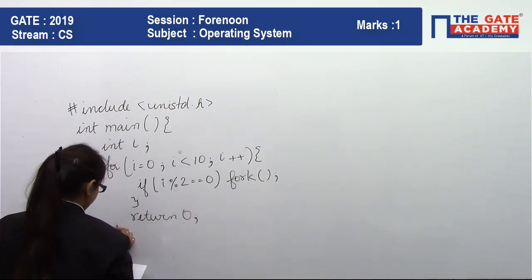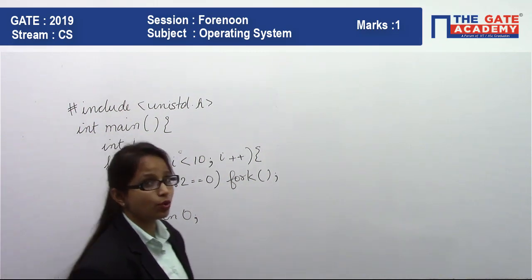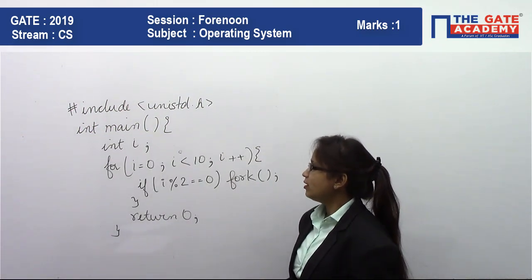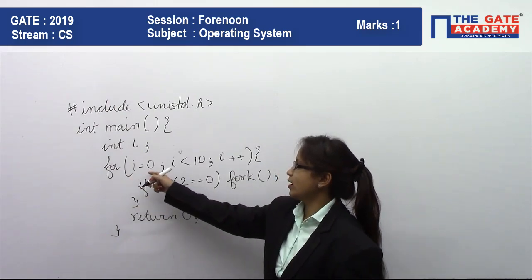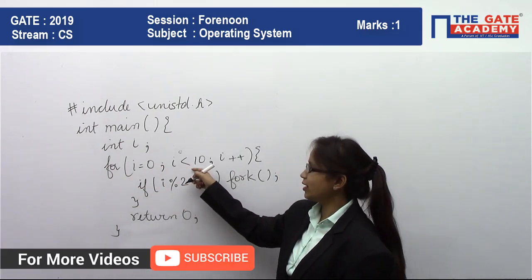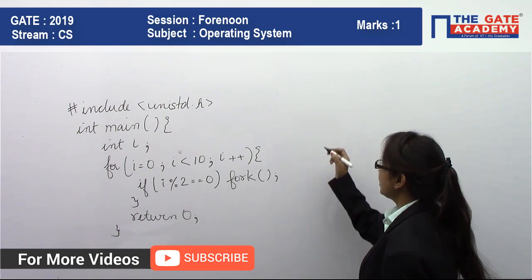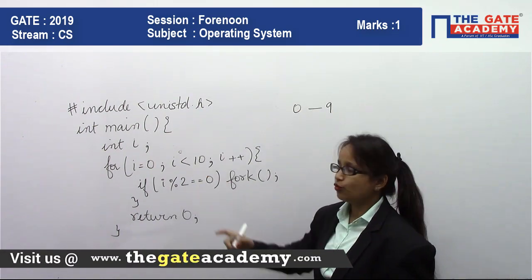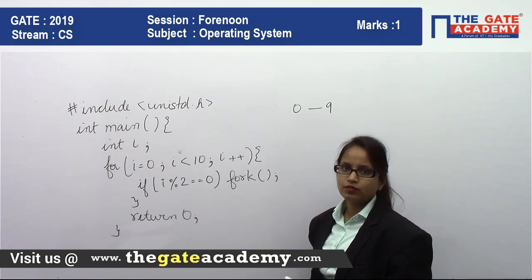return 0; } So this was the code given to you. In this question, in the main there is one for loop running here from 0 to 10. So you have the condition of 0 to 9, less than 10, so the for loop will be running for range of 0 to 9.